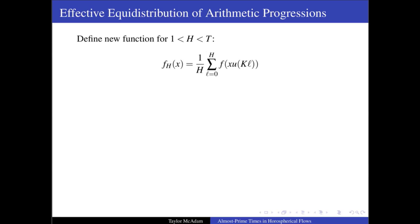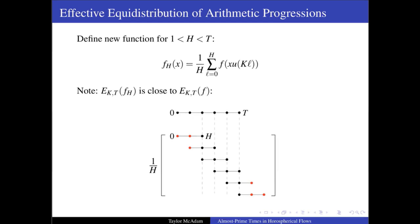We're going to start by introducing a new function f_H, which is the average of f over the first few iterates, where we're thinking of H as being small with respect to T, and in the end it's going to turn out to be a small power of T. Notice that the average of f_H is close to the average of f. And in the case of E_{K,T} of f_H, we're taking an average of averages. And all of the terms will cancel out except for those at the boundaries. Since we consider H to be small in comparison to T, this error is going to turn out to be negligible. Does this picture make sense?